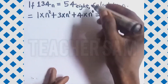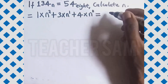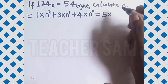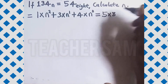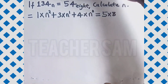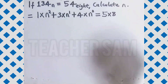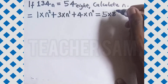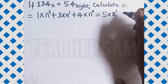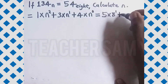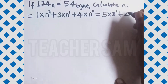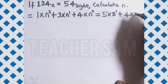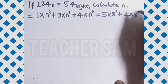Now we do the same thing with the right side — convert 54 base 8 to base 10 as well. The place values are 0 and 1, so that will be 5 times 8 raised to power 1, plus 4 times 8 raised to power 0.